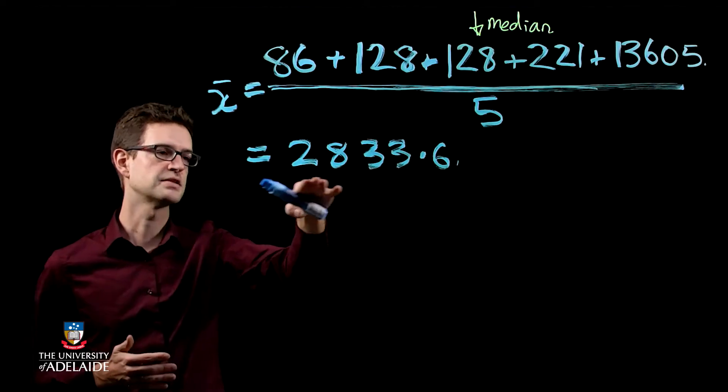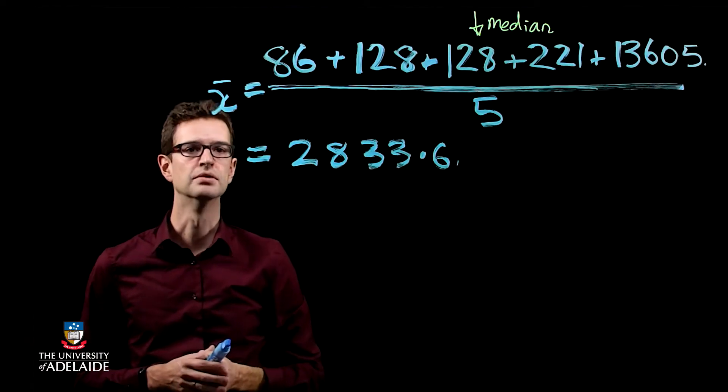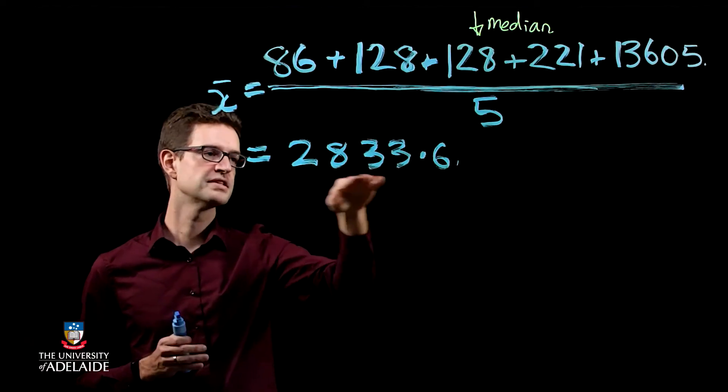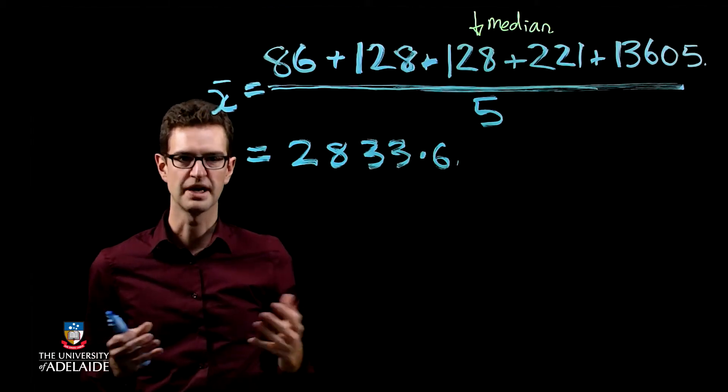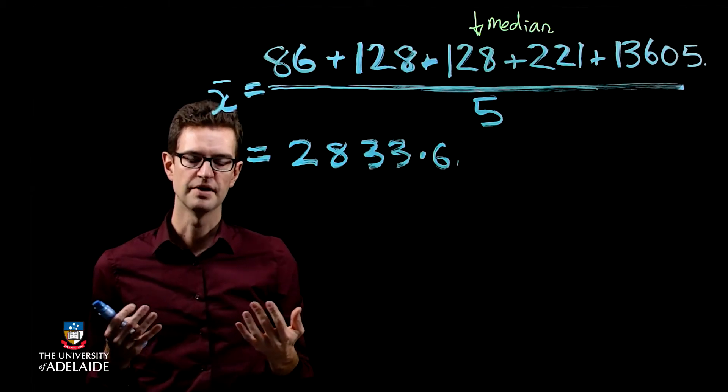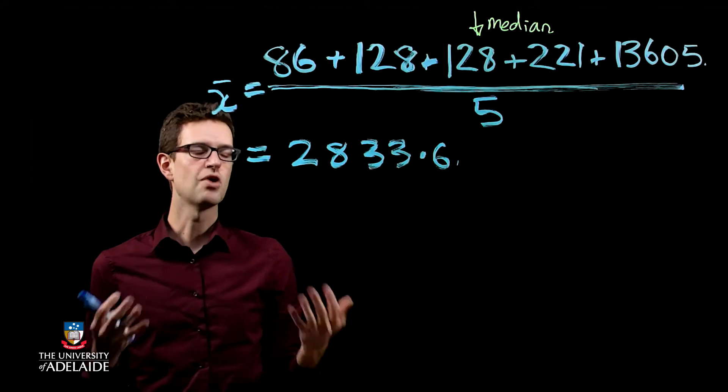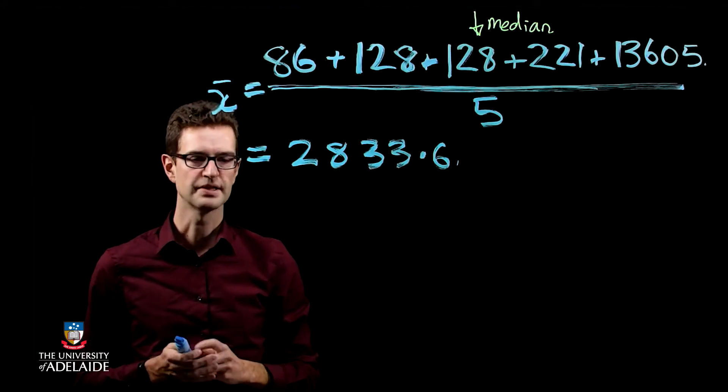But anyway, this is how we estimate this using the sample mean. The reason why this is a very large number is because this population of people, a number of friends on Twitter, is very, very right skewed. So you do have to be careful with these things.